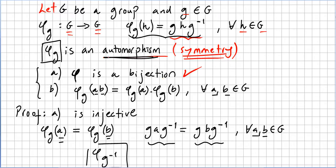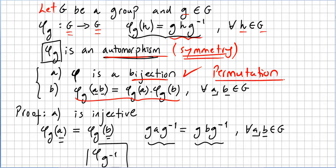It is proved that φ is a bijection. A quick note: since φ is a bijection from G to G, we can also call it a permutation — φ is a permutation of G.